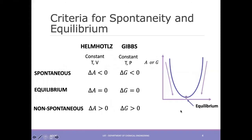But in most cases we are dealing with non-isolated processes. So for a spontaneous process in non-isolated systems at constant temperature and pressure, we consider the Gibbs free energy. For a spontaneous process, Gibbs free energy decreases until it reaches a minimum value. Delta G equals zero at equilibrium, and for a non-spontaneous process delta G is greater than zero.